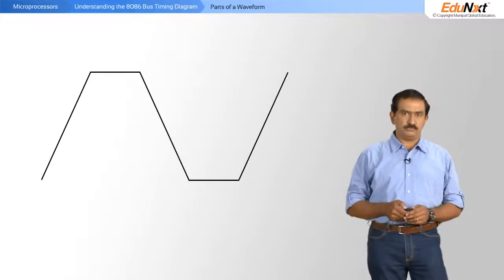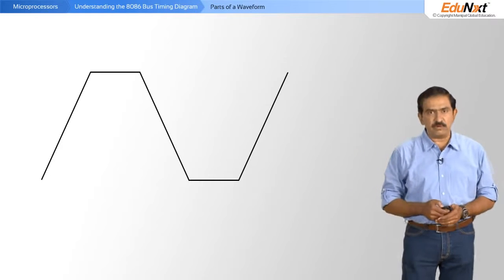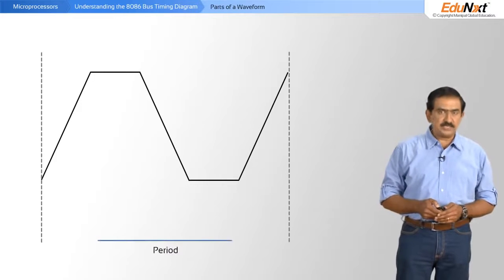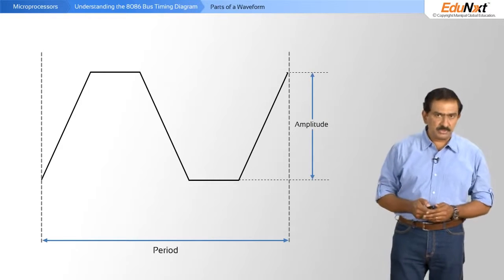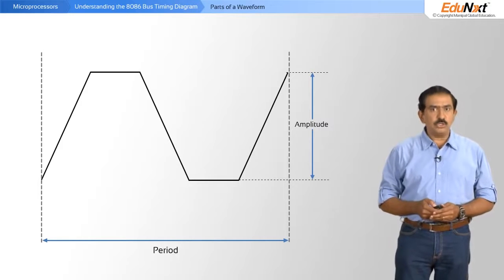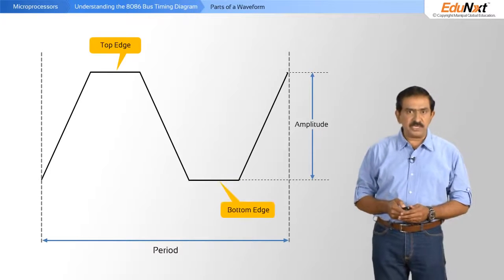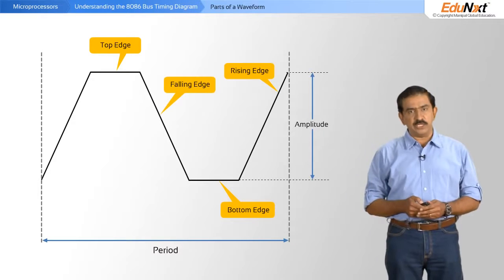Before we begin understanding what bus timing diagrams are, we must understand the various parts of a waveform. What you see on the screen is a typical waveform. A waveform of course has a period and an amplitude. A waveform also has what's called a top edge, a bottom edge, a rising edge and a falling edge.